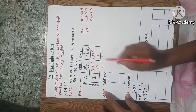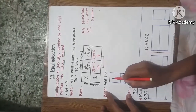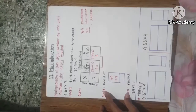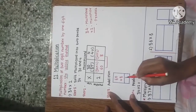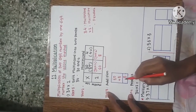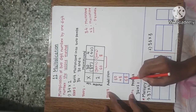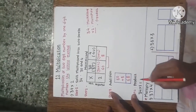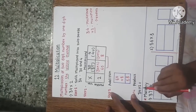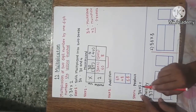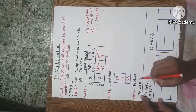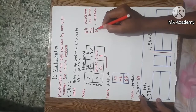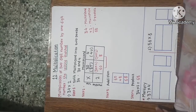Now we have to add these two results: 60 plus 8. We get 68. This is the product. We add the two numbers and get the product. So 34 into 2 is equal to 68. We call this answer the product.